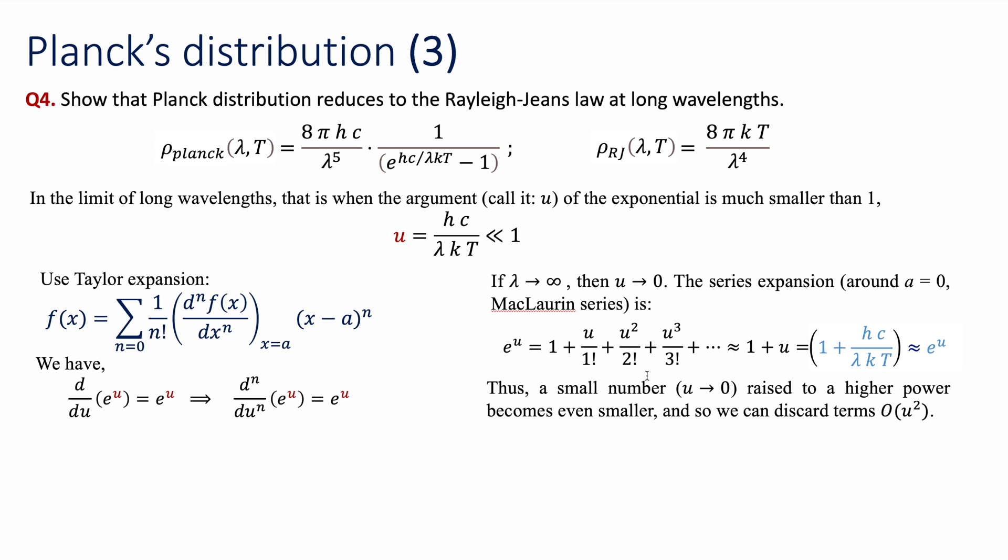So I can basically discard all the higher order terms and then end up only with 1 plus u over 1 factorial. 1 factorial is 1, u is all this argument of my exponential, so I just get the substitution. e to the power of u is approximately 1 plus the argument in the range of long wavelengths.